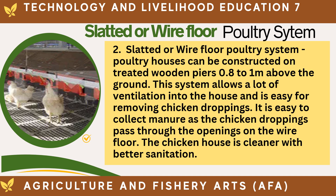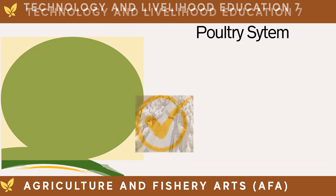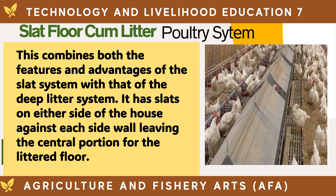It is easy to collect manure as the chicken droppings pass through the openings on the wire floor, and the chicken house is cleaner with better sanitation. Next is the slat cum litter poultry system. This combines the features and advantages of the slat system with that of the deep litter system. It has slats on either side of the house against each side wall, leaving the central portion for the littered floor.